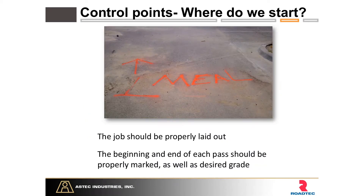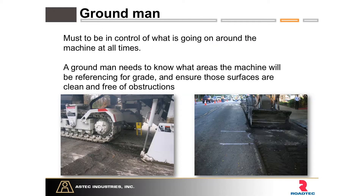Control points. Here is an excellent case of what not to do — one gentleman was having fun with the crew when he laid out a pass in an incorrect manner. We need to properly lay out the job: tell the crew where we're going to start and end each pass, how many passes we're going to make, identify obstructions, and lay the job out as part of our game plan. The ground man is a key part of job layout and carrying out the game plan.